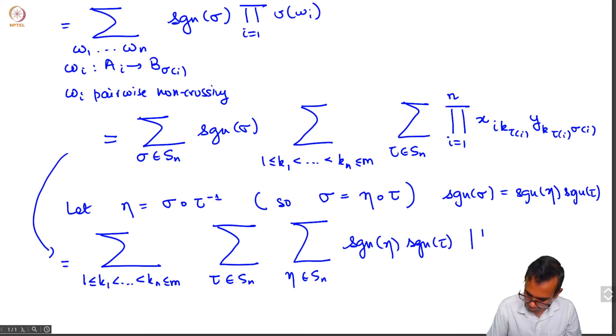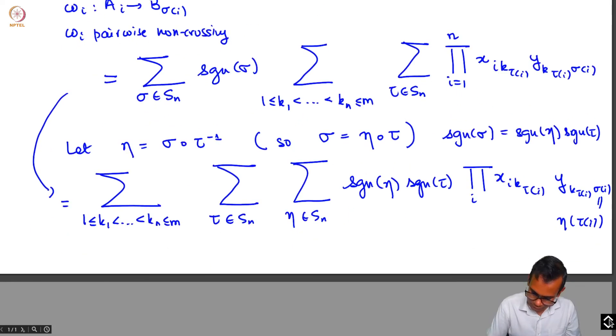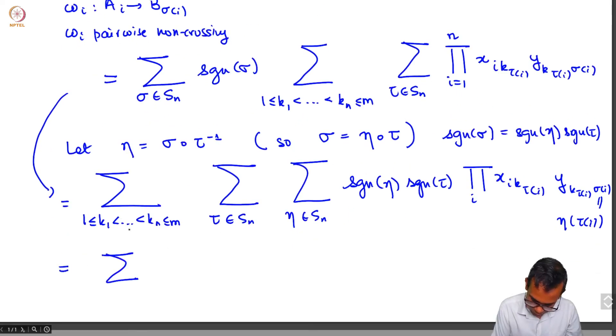And then we have product over i, xi k tau i, and then we have y k tau i sigma i. Let's call this sigma i, but this is the same as eta of tau i. So now this is just the sum over: